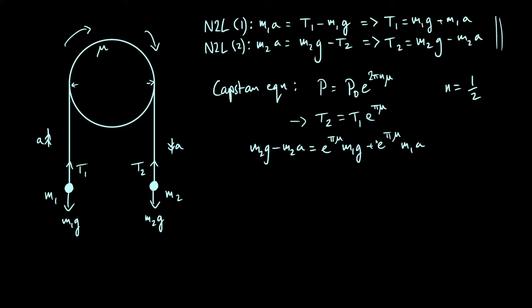Now if we want to find the acceleration we just have to rearrange the terms a bit and kind of regroup, refactorize, and what we're going to get, if we put all the g terms on one side, you'll find you get m2 minus m1e to the pi mu times g is equal to, then we put all the a terms on the same side, we get m2 plus m1e to the pi mu times the acceleration.